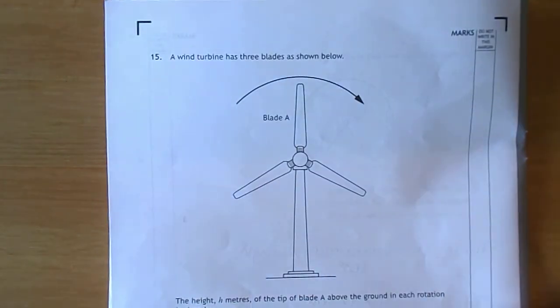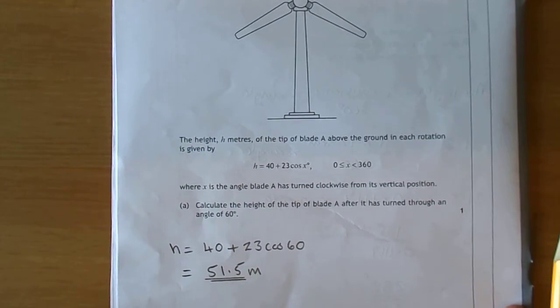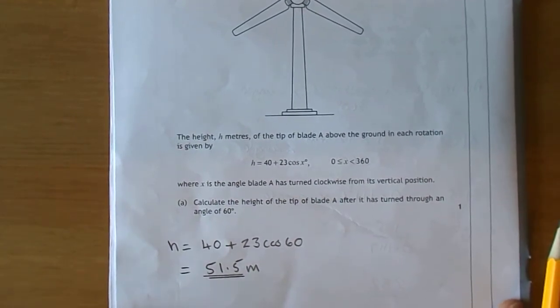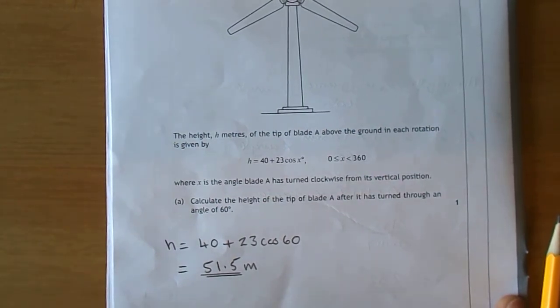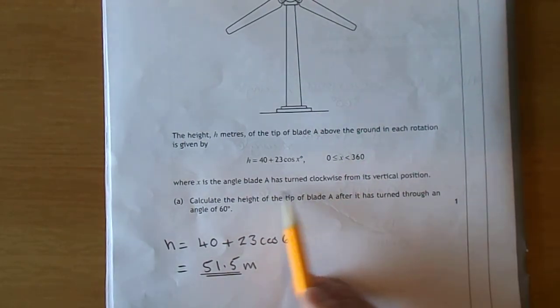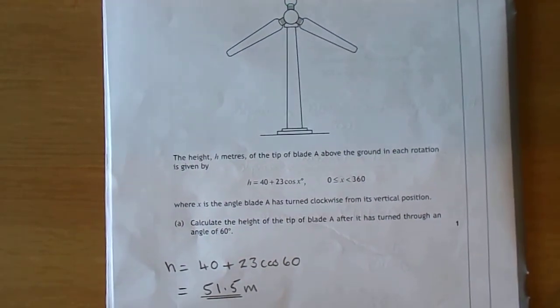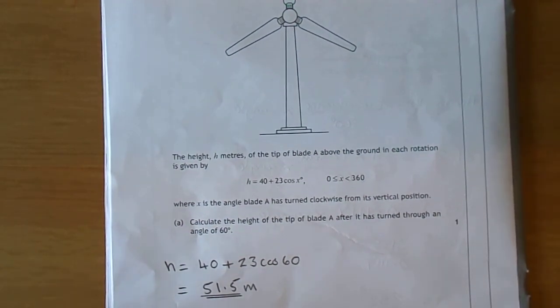Let's go on to question 15, the last one. We have a wind turbine with three blades. The height of the tip of the blade above the ground for each rotation is given by h = 40 + 23cos(x), where x lies between 0 and 360, and it's the angle blade A has turned clockwise from the vertical.